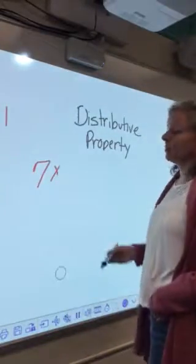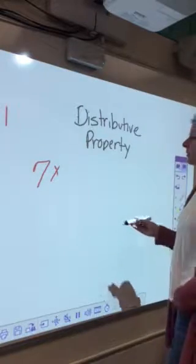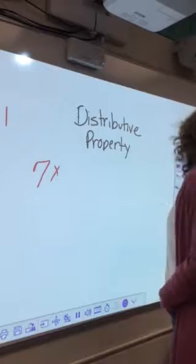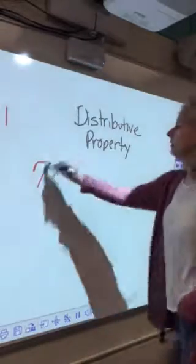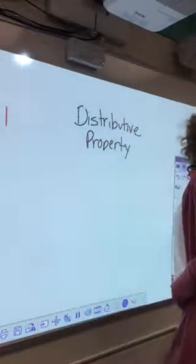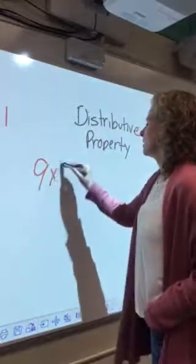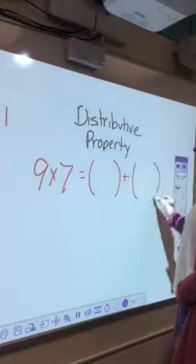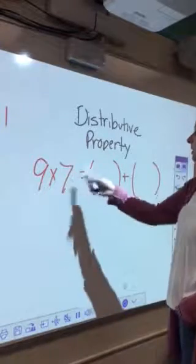So let's just do it this way: 9×7. This time I'm putting up my parentheses and my addition sign. This time I'm going to keep the 7. So what number do I break apart this time?